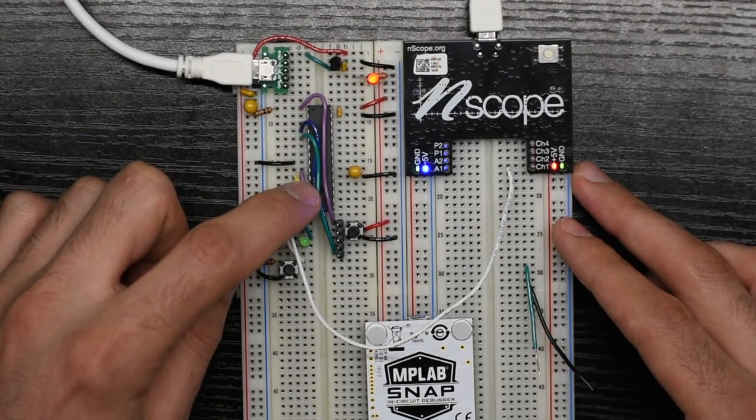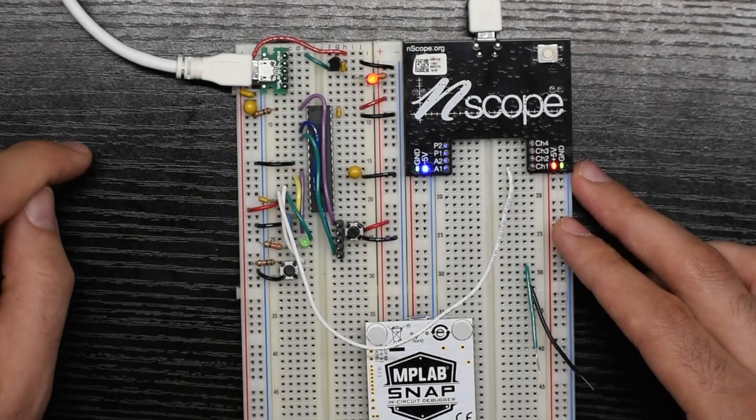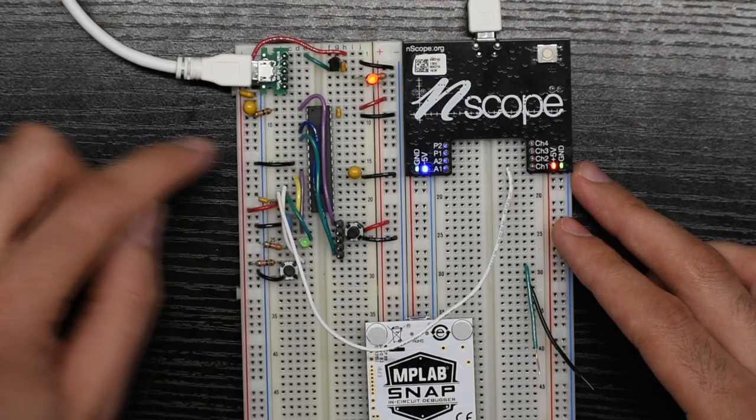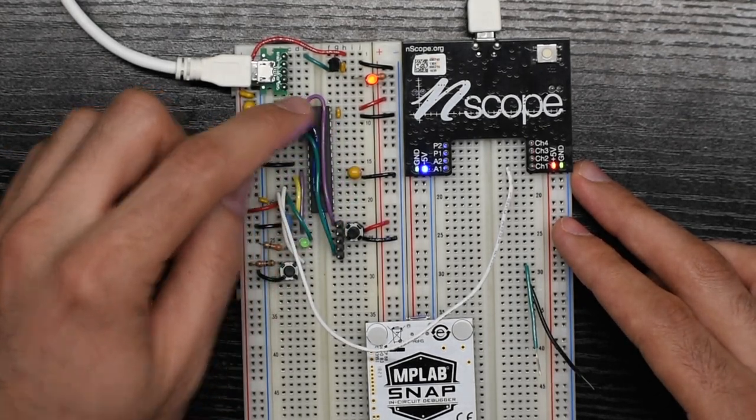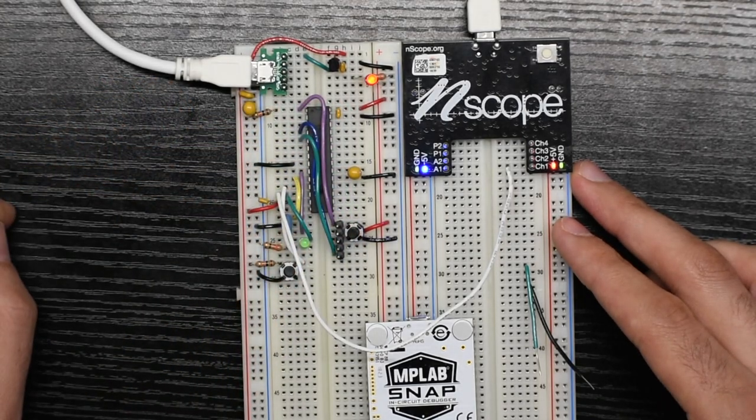Here's our PIC32MX170F256B. It's a DIP style PIC, the 100 series which doesn't have USB. It has 28 pins but you can see a lot of them are going to be used up just for this bare minimum setup.